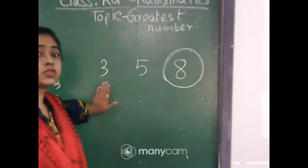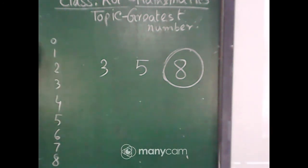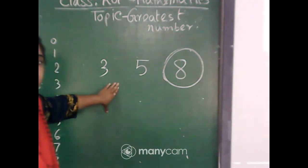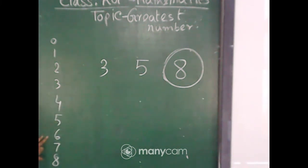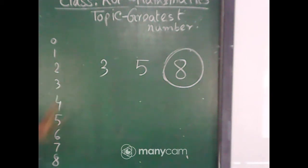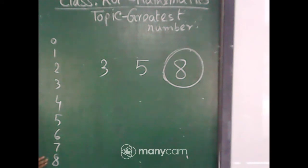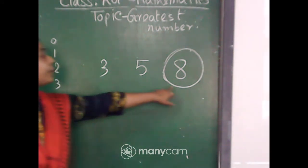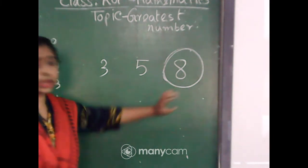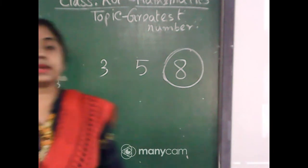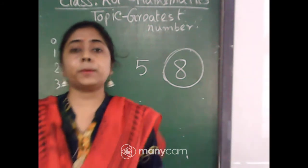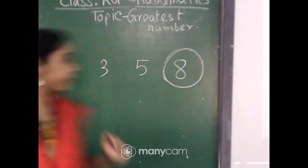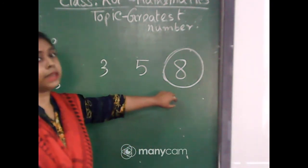So here the first number is 3, then after counting we reach 5, then 8. There is no 4, no 6, no 7 in our list, but 8 is here. So 8 is the biggest number — the greatest number. We circle on 8. You can also say the largest number or the biggest number, but we commonly use 'greatest number.'